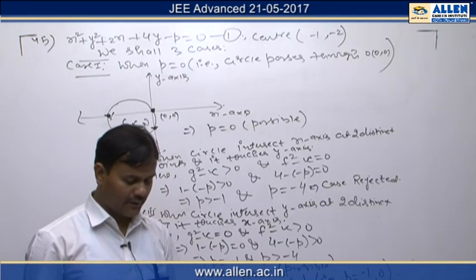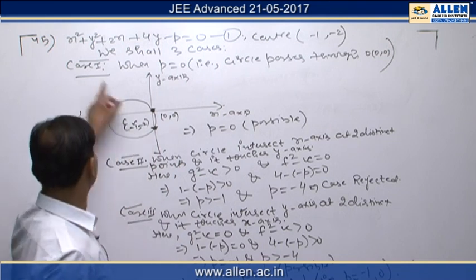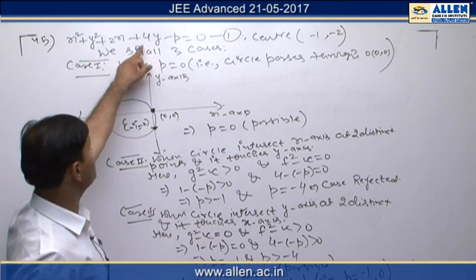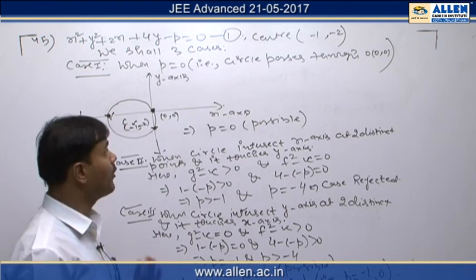In question number 45, we have to find different values of p such that the circle x² + y² + 2x + 4y - p = 0 will intersect the coordinate axes at three distinct points.